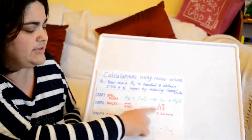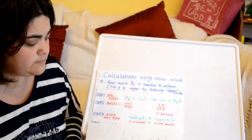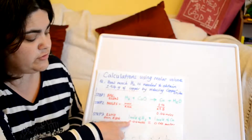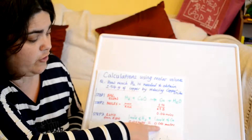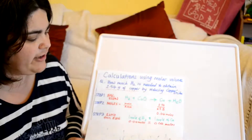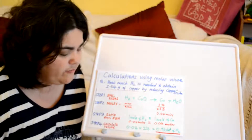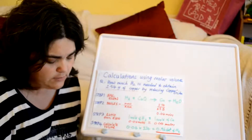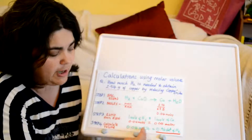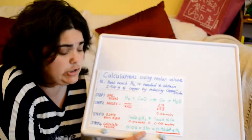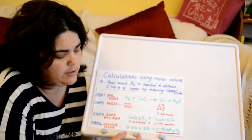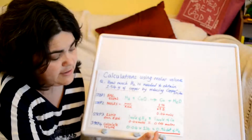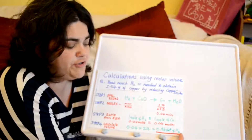Step three is looking back at the ratios in the equation. This is a one-to-one ratio — one mole of hydrogen makes one mole of copper. So if we've got 0.04 moles of copper, we must have started with 0.04 moles of hydrogen.